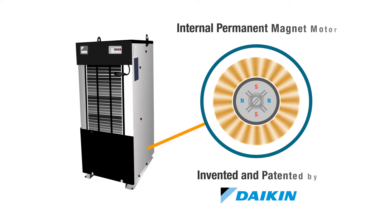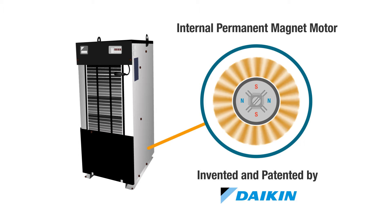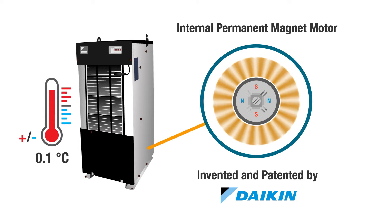Daikin patented IPM motor and inverter technology design improves machining accuracy by precise temperature control as low as plus or minus 0.1 degrees Celsius, minimizing metal deformation of your products due to heat.